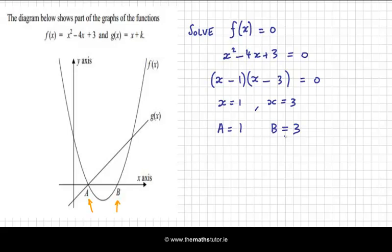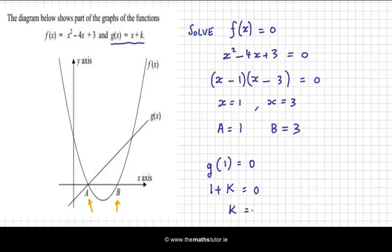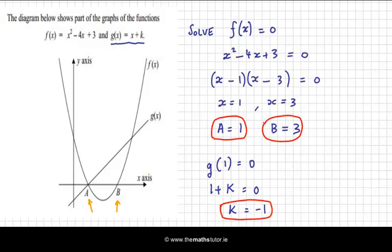Finally, we're asked to find the value of k, where g of x is x plus k. We know the linear function cuts through the point a, where x is 1. When x is 1, g of x is 0. So g of 1 equals 0, meaning 1 plus k equals 0, so k equals minus 1. Judging from our graph, we've found the values of a and b where f of x cuts the x-axis, and k, the constant in the linear function.